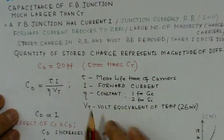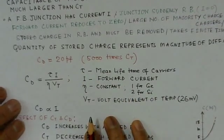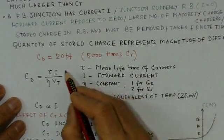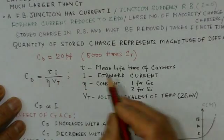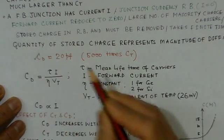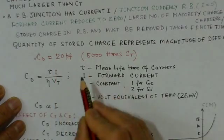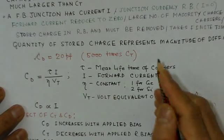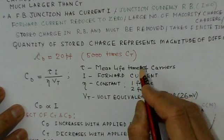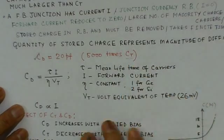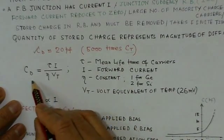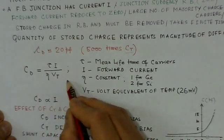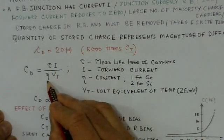Now we see the quantity of stored charge represents magnitude of diffusion current. Now the value for this diffusion capacitance is typically of the order of 20 picofarads, and said to be about 5000 times larger than the transition capacitance. So this is the governing relation for finding the value for the diffusion capacitance, tau I over eta V_T.